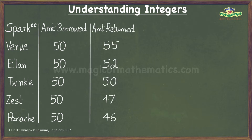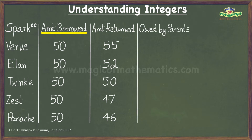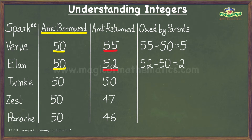The children had worked out a deal with their parents before starting their business. As per the deal, the parents will retain the original amount that the children had borrowed from them and give any excess amount to the children. Let us calculate the amount that the parents owe their children and capture it under the column labeled Owed by Parents. It is clear that Verve's parents owe her 55 minus 50 which is equal to 5 sparks. Similarly, Elan's parents owe him 2 sparks and Twinkle's parents owe her nothing.